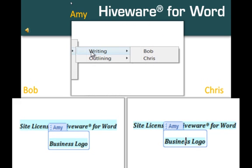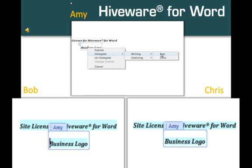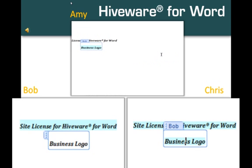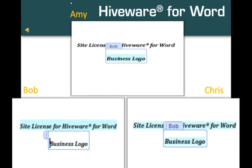There's also a choice for Outlining, but Writing is the usual choice, and it's all we need in this demo. The menu shows the names of the authors that have been recruited for this document — Bob and Chris. We'll select Bob. On Amy's screen, the logo element of the document now shows a label with Bob's name, showing that Bob is now the owner of this section.